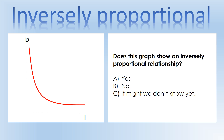Here again we've got a graph with some sort of independent variable against some sort of dependent variable, and we've got a line of best fit that looks like this. Does this graph show an inversely proportional relationship? Select your answer. The answer is the same - it could be, but again we don't have sufficient data to answer that question yet.